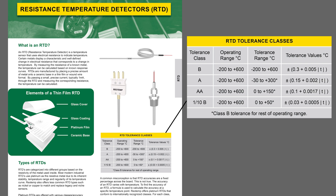This chart shows the tolerance range for each class of RTD. Let's look at the class A RTD. It has a better accuracy than class B, but only between negative 30 and 300°C. Outside of that range, it reverts back to a class B accuracy.